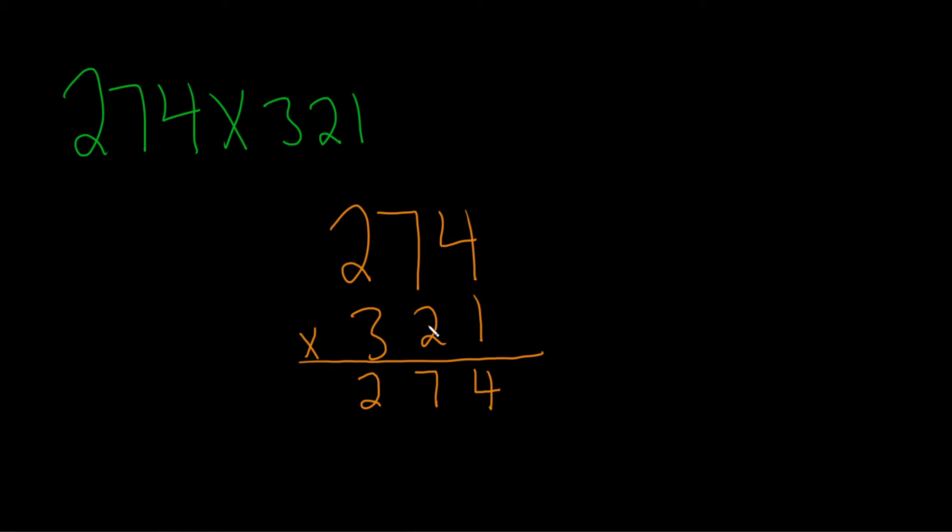Then you go to the next number. 2 times 4 is 8. Notice it's written below the 2. 2 times 7 is 14, so you write down the 4 and carry the 1.